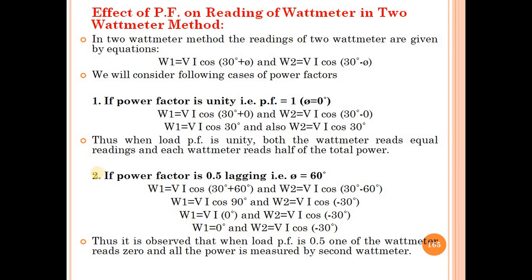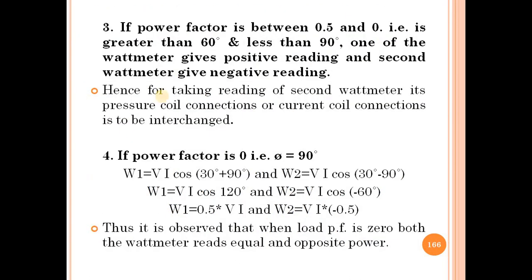Case 3: When the power factor is between 0.5 and 0, i.e., φ is between 60° and 90°, one watt meter gives a positive reading and the second watt meter gives a negative reading. Hence, for taking the reading of the second watt meter, its pressure coil connections or current coil connections must be interchanged.